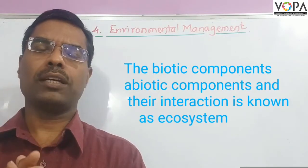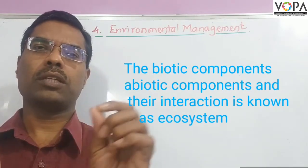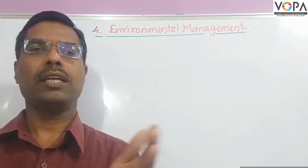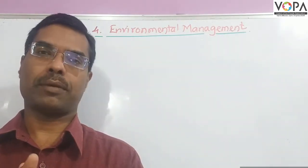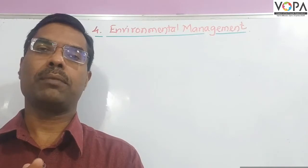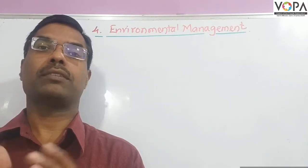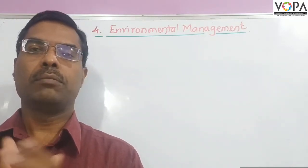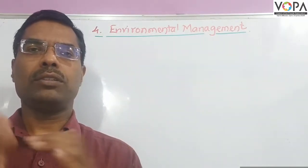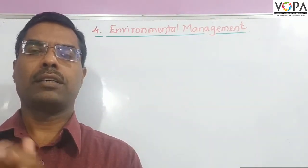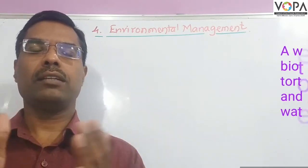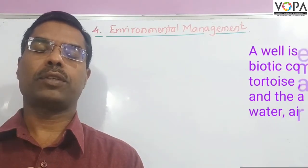As a nearby example, a well is a beautiful example of an ecosystem. A well (vihiri) is an ecosystem. In Marathi, ecosystem is called 'pari sanstha'. In this ecosystem there are some biotic components and some abiotic components.